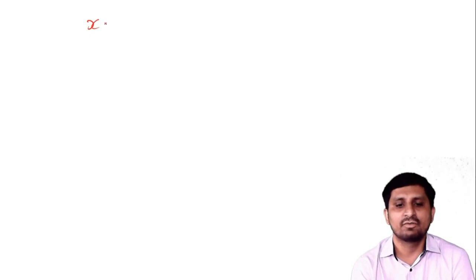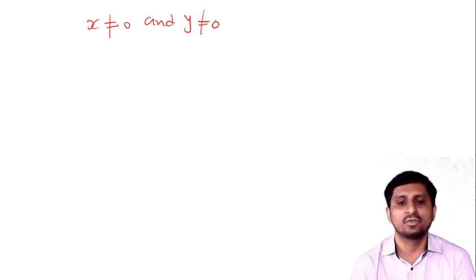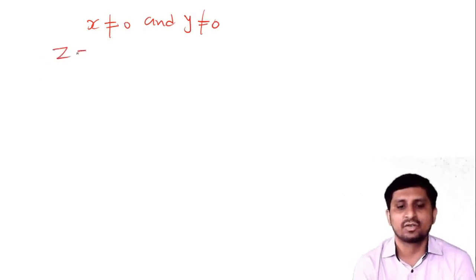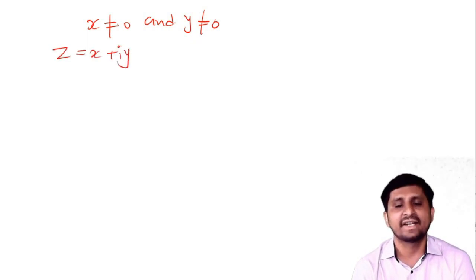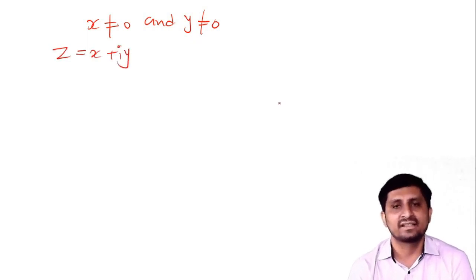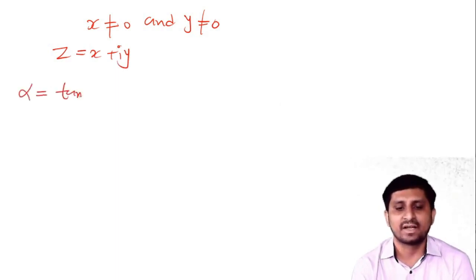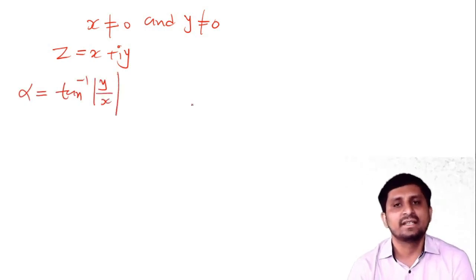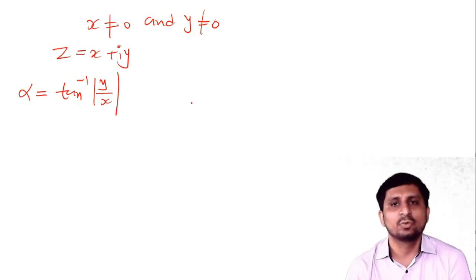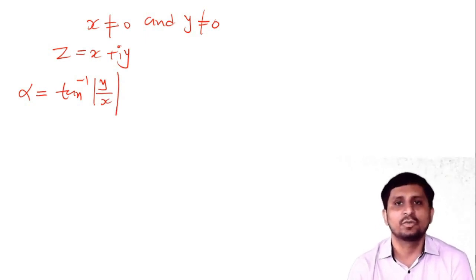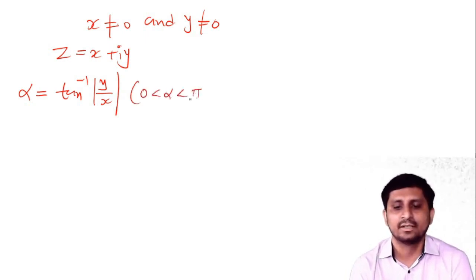For the general case where x ≠ 0 and y ≠ 0, first find alpha = tan⁻¹(|y/x|), taking x and y both as positive. This means the complex number is in the first quadrant, and alpha is always between 0 and π/2.